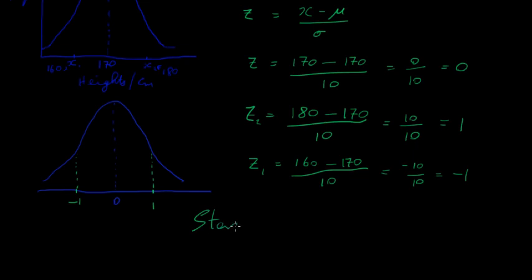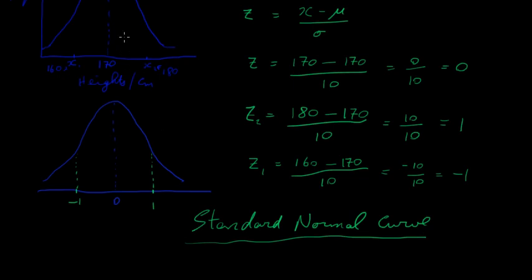This particular curve is called the standard normal curve. We've converted our normal curve into a standard normal curve by converting the x values into z values. We'll use this information in the next video to calculate various probabilities.